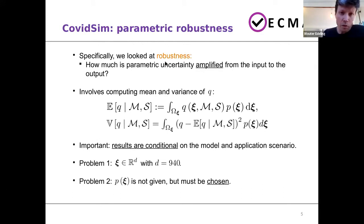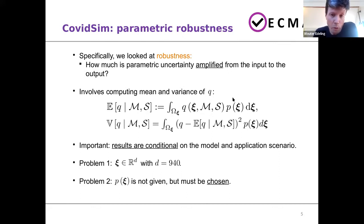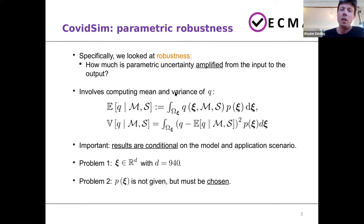To be more precise, we looked at what we call parametric robustness. Robustness is a somewhat ill-defined term, but we define it here as a measure of amplification or potentially damping from uncertainty at the input to the output. We assume some uncertainty at the input by specifying a probability density function P(Xi). That will have a certain variance propagated through the nonlinear model, and you will get some variance at the output. We can compare those two variances and say something about the amplification or damping of uncertainty. This involves computing statistical moments — the mean and variance, weighted by the PDF of the inputs.